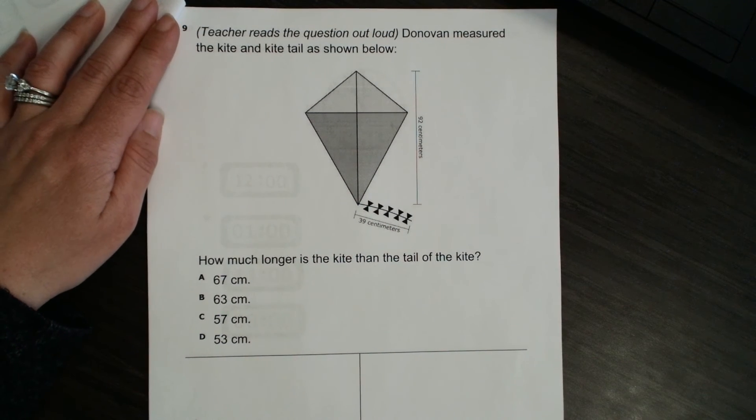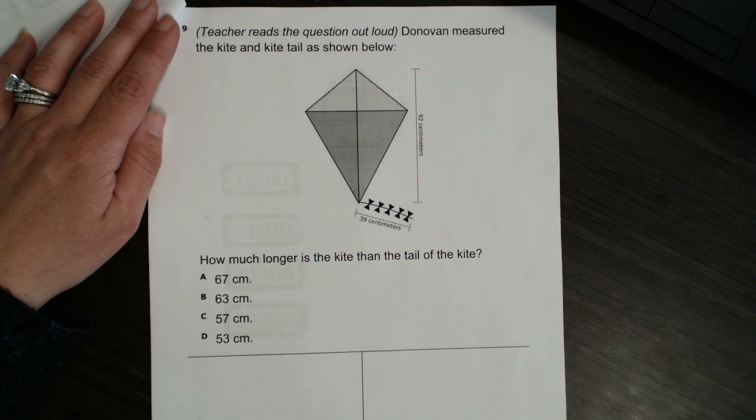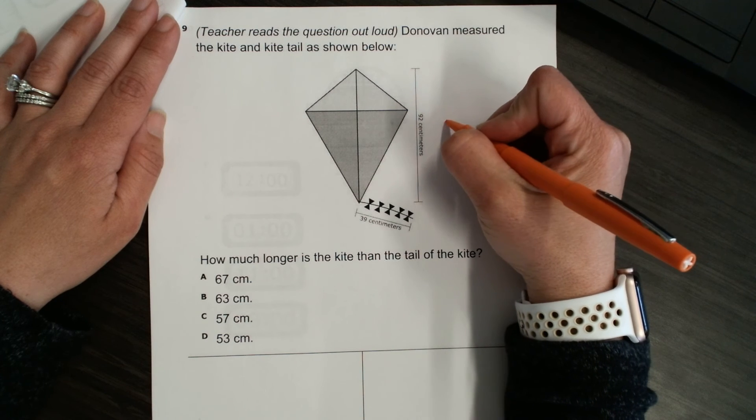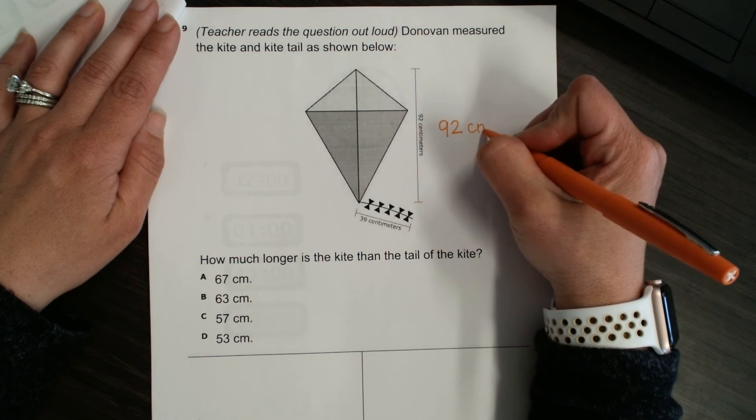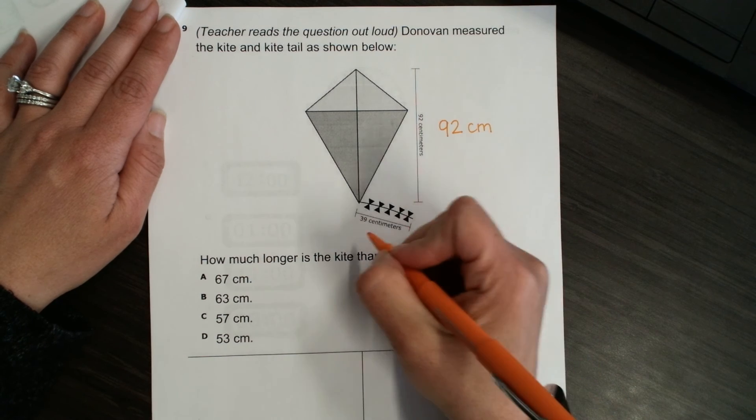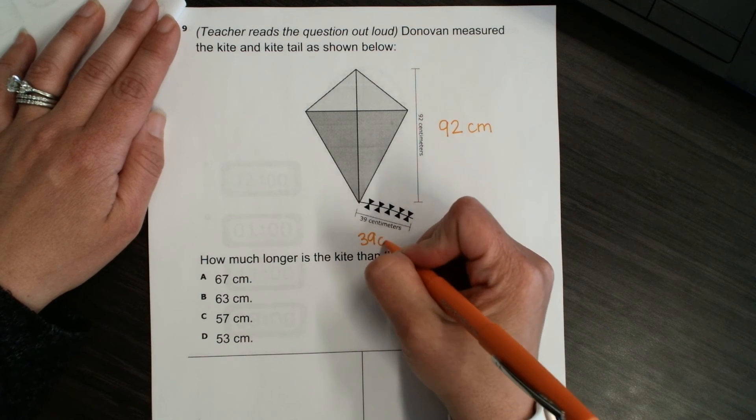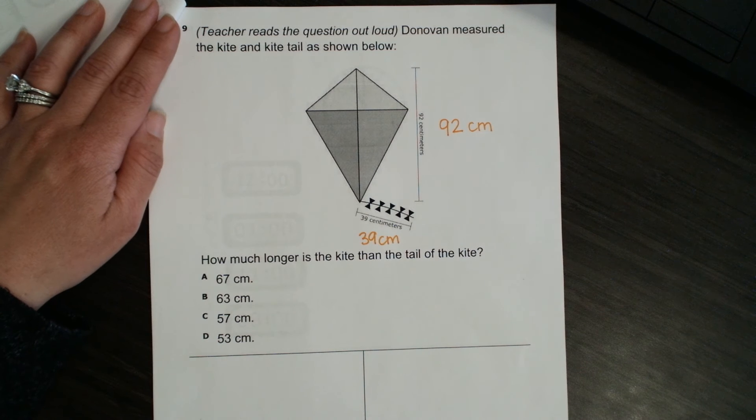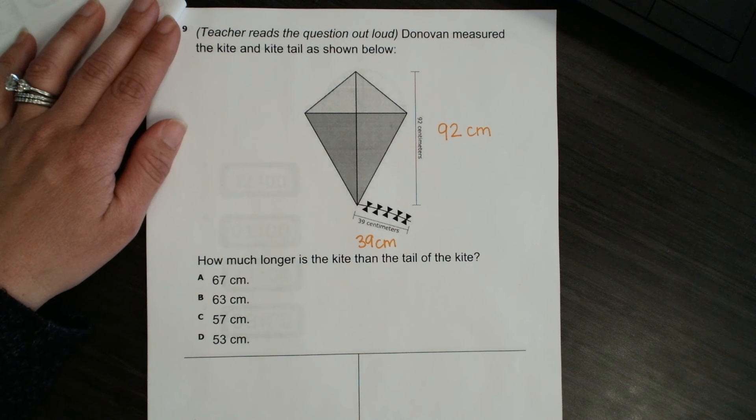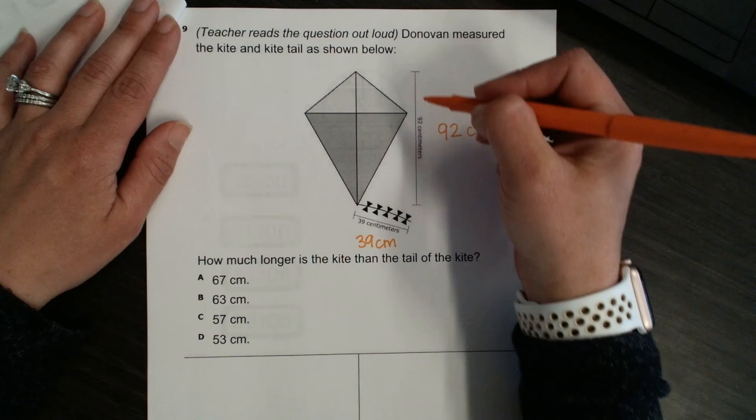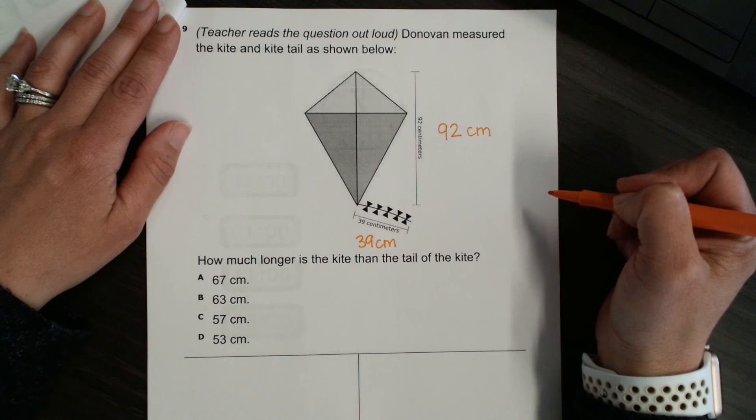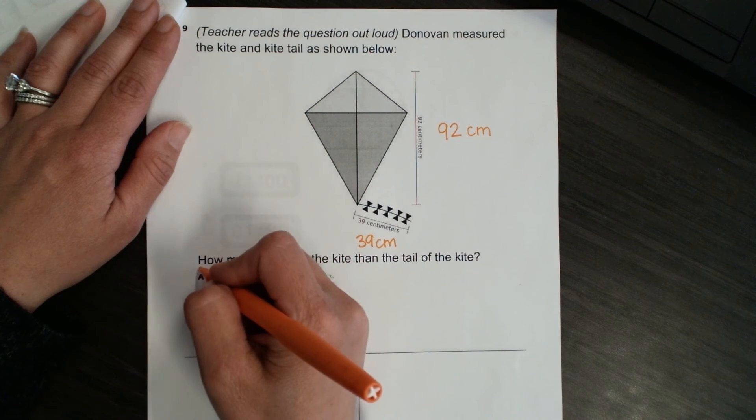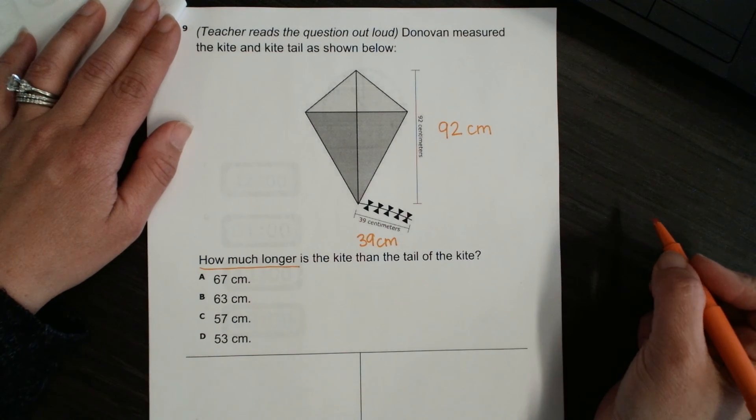Number nine. Donovan measured the kite and kite tail as shown below. So, we have 92 centimeters. I'm going to write it here just so we can see it better. And 39 centimeters. Our question says, how much longer is the kite than the tail of the kite? Okay. So, this is the length of the kite, and this is the tail of the kite. So, how much longer, we need to subtract.